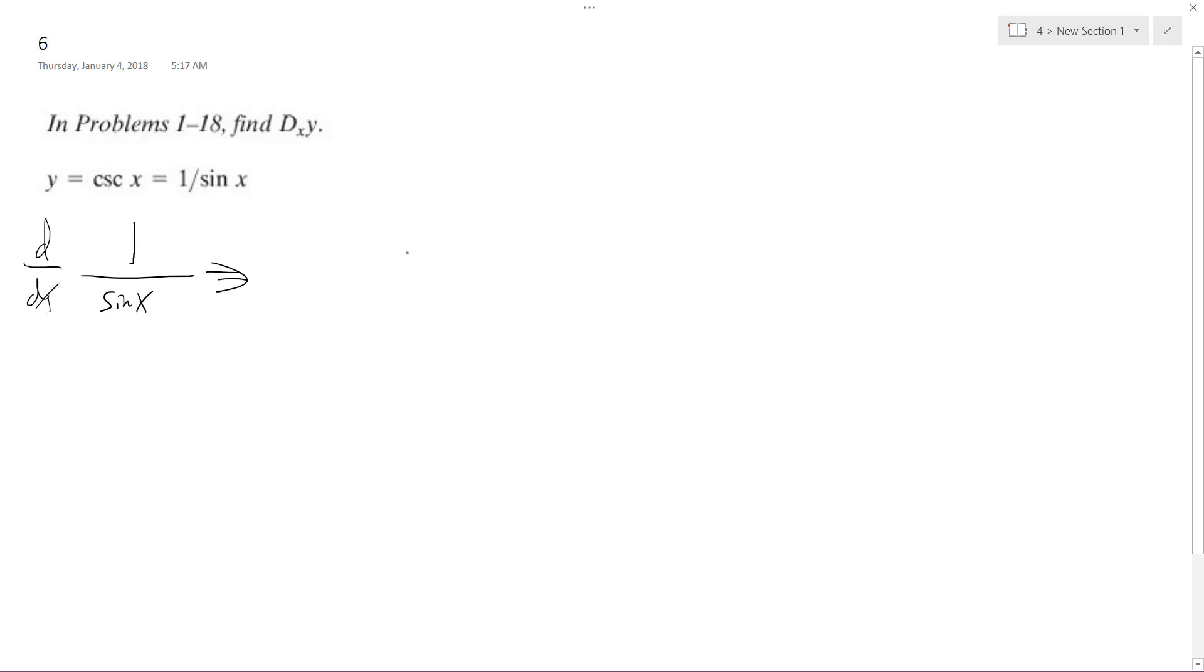d dx of this whole thing. But what I'm going to do is it's going to be d dx of 1 times sine of x minus 1 times d dx of sine x all over sine of x squared.